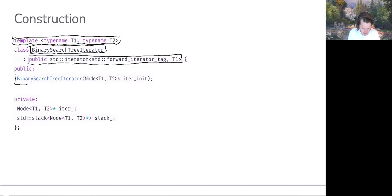So we can see our parameterized constructor. It's going to take a single argument of type node, well it's going to be a pointer to a node of T1, T2, and we're going to name that parameter iter_init.